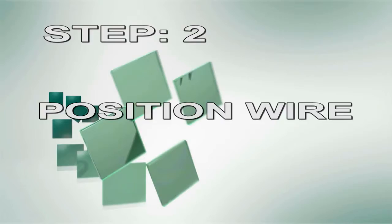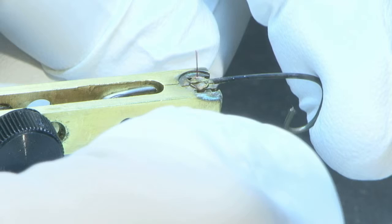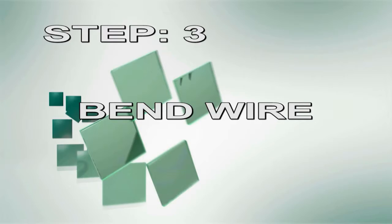Step 2. Position wire. Now place the leading end of the wire on the ring holding fixture using the piano wire.